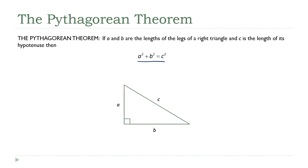One thing I want to emphasize before we move on — it's just a syntax thing, and it bugs me when I see students say this — the Pythagorean theorem is not just the equation a squared plus b squared equals c squared. That is a part of the theorem. The Pythagorean theorem is a statement about a relationship that has to exist between the lengths of the sides in a right triangle. We're going to look at one quick example before moving on to the next lecture, where we'll talk about this in more detail.